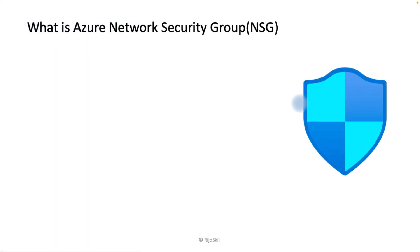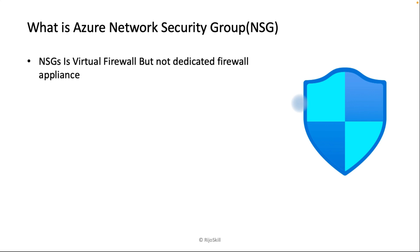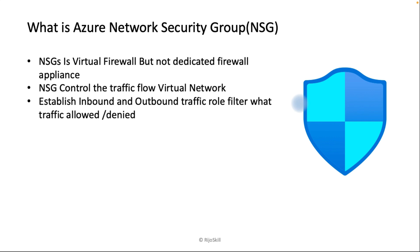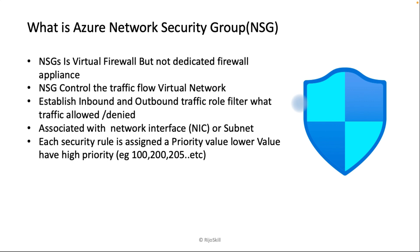So what is Azure Network Security Group? NSG is a virtual firewall, but not a dedicated firewall appliance — it works the same way as a firewall. NSG controls the traffic flow in a virtual network and establishes inbound and outbound traffic filters specifying what traffic is allowed and what is denied. It is associated with a network interface or subnet. Each security rule is assigned a priority value; the lower the value, the higher the priority. For example, a rule with priority 99 will run before a rule with priority 100.